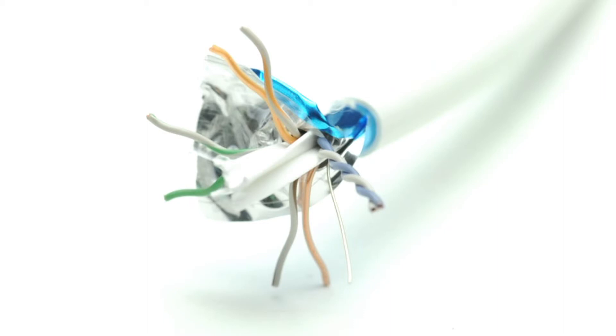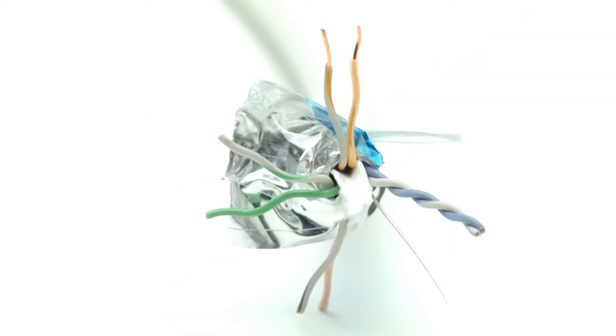Each of the four pairs are made up of two individual wires that are twisted together. The individual wires or conductors are made from 24 wire gauge solid pure copper wire.